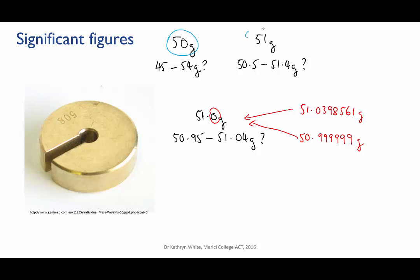Okay, so the difference between those three values for the mass, 50 grams, 51 grams, and 51.0 grams, was the number of digits for which we were sure of the value. This is the basis of significant figures.